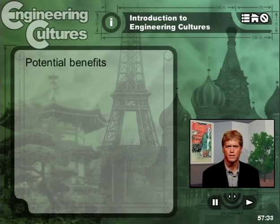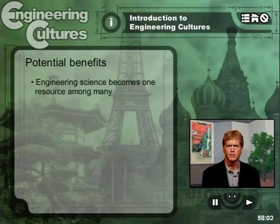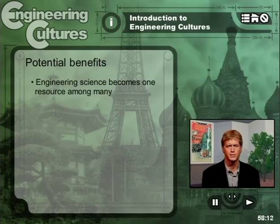Adopting the method of problem solving with people can have significant implications. For example, one may encounter some significant changes in the role engineering problem solving plays in one's life and work. Most importantly, engineering science — which engineering in the United States has valued so highly, at least since Sputnik — becomes one resource among many for engineers to use in problem solving. Rather, it becomes one crucially important resource that engineers need in problem solving, alongside other important resources that particularly involve engineers dealing with other people.